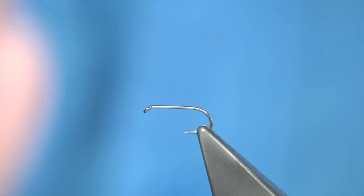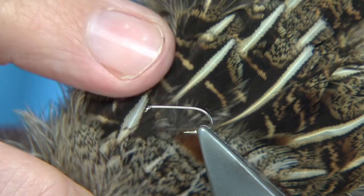Now, you could use the partridge hackle itself. You see, I'm going to use these small covert feathers, these ones here. Just using these up because they've got a lovely tip and that light center and it works really well.